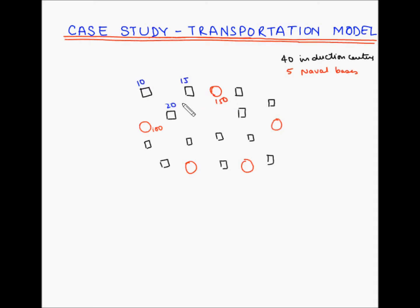As you can see the preference would be to move these young recruits from these induction centers to the closest naval base. However, due to the number of recruits reporting at the induction centers and the capacity available at the naval bases, it may not be possible for all of them to be accommodated in the closest naval base. The transportation model is used to move these recruits from these induction centers to the naval bases to ensure that they are closest to their native place.